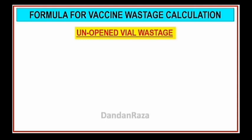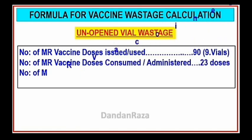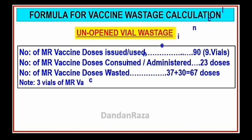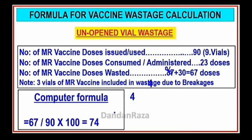Formula for vaccine wastage calculation — unopened vial wastage. Number of MR vaccine doses issued or used: 90. Number of MR vaccine doses consumed or administered: 23. Number of MR vaccine doses wasted: 37. Plus 30 — which is three vials of MR included as wastage due to breakage — equals 67. The formula is: 67 divided by 90, multiplied by 100, equals 74.44 percent.